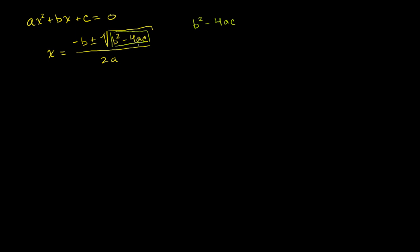If b² - 4ac is greater than 0, we're going to have two solutions. The square root of some positive non-zero number has a positive and negative version, so you'll get negative b plus that positive square root and negative b minus that positive square root, all over 2a. So if the discriminant is greater than 0, we have two solutions.